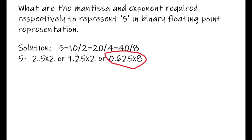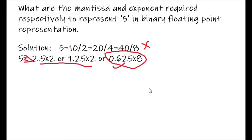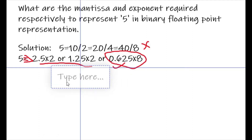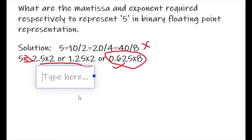We will take 0.625 multiplied with 8 because 2.5 times 2 and 1.25 times 2 are also not the binary floating point representation, but 0.625 times 8 is. So we take the binary floating point representation: 0.625 multiplied with 2 to the power 3.